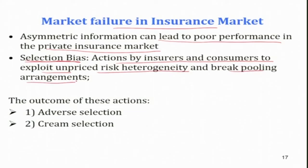When we talk about insurance, it means a risk pool — a pool of people with different risks: high risk, medium risk, and low risk. It should be a mix of all kinds of risk involved. Suppose in a society with a population of 1 billion, we consider the distribution of health risk across that entire population.